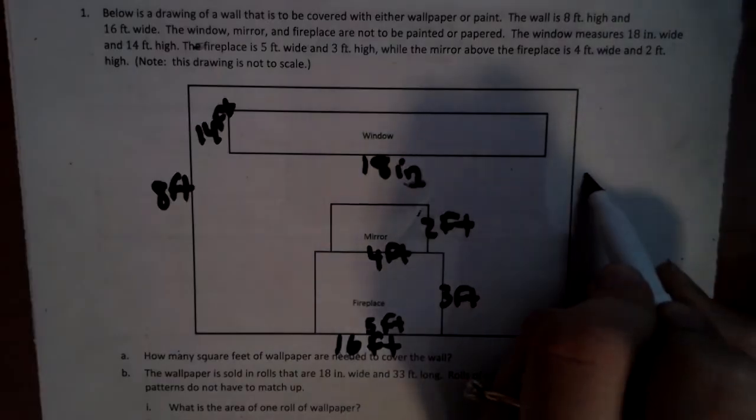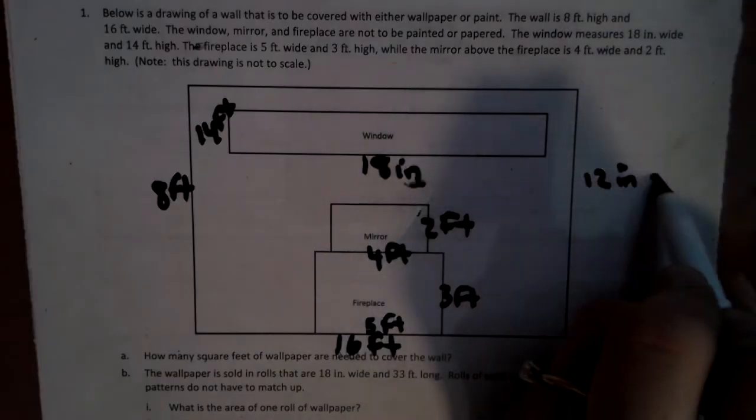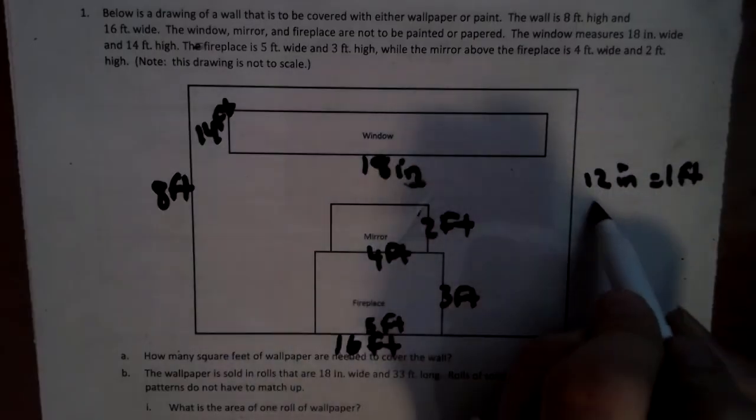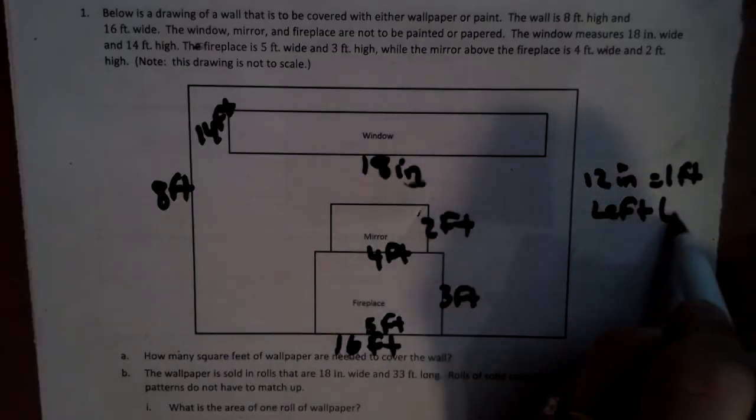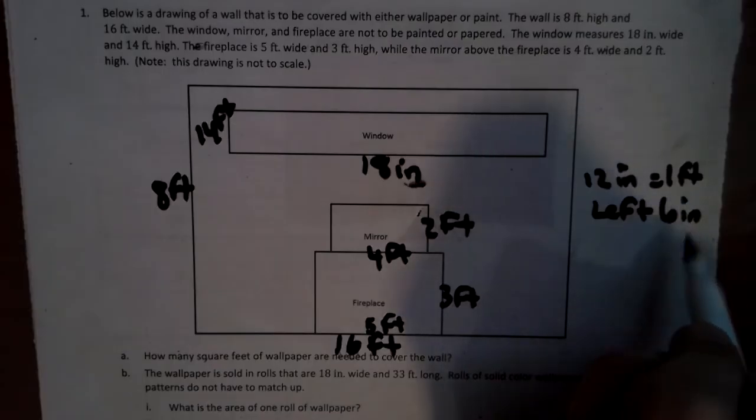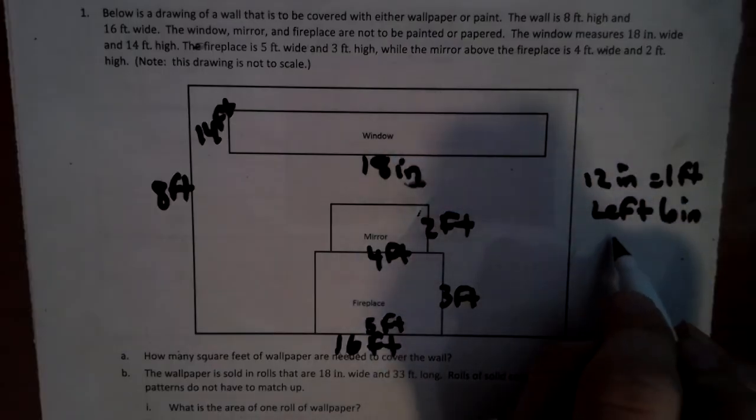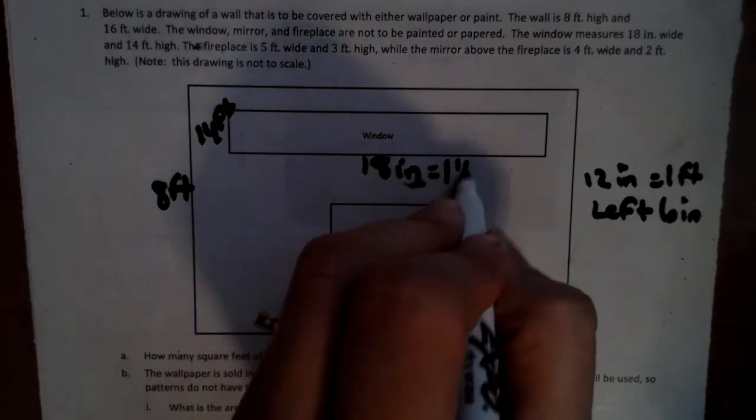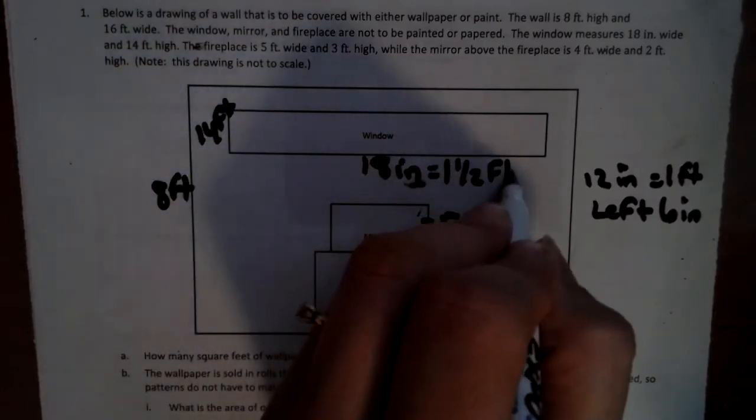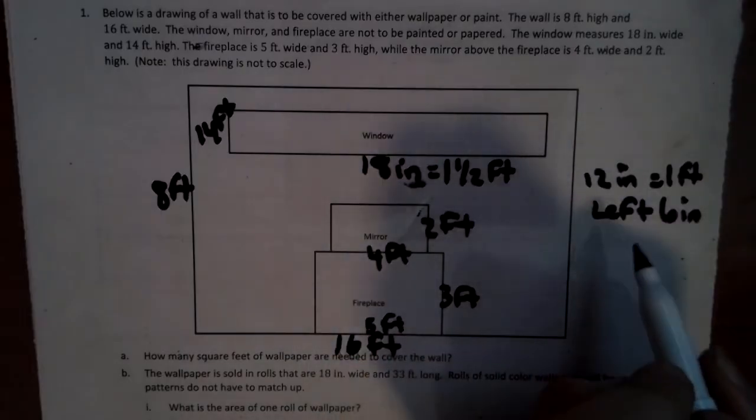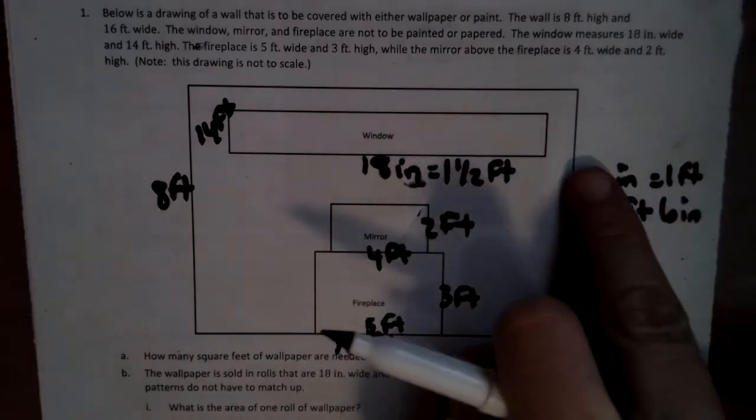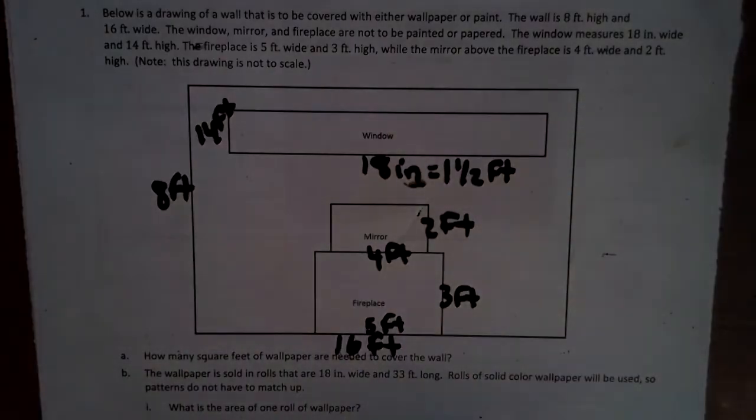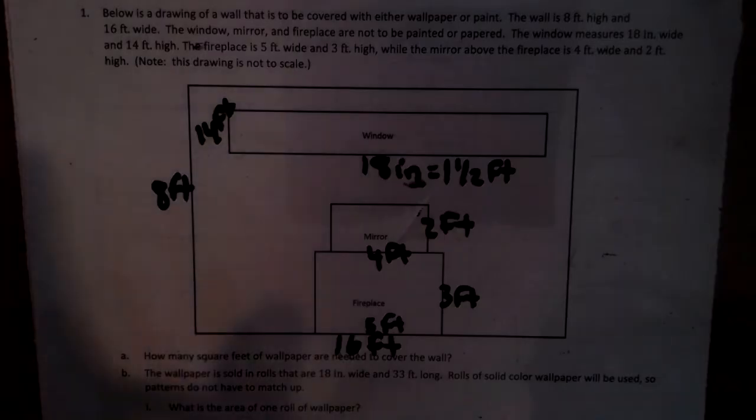So we have to convert that. There's 12 inches equals 1 foot. So we take 12 out of that, we're left with 6 inches, and when we know about 6 inches, it's a half. So that's going to be 1 and a half feet. Okay, so now I'm going to erase the conversion because I'm going to need space, and you're going to need to write small because we got to do a lot of math here.